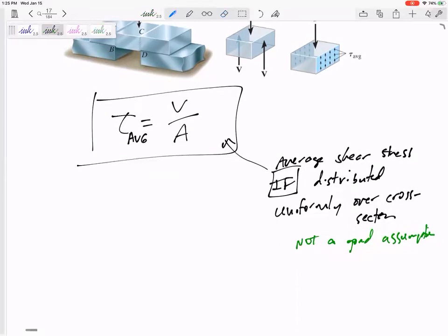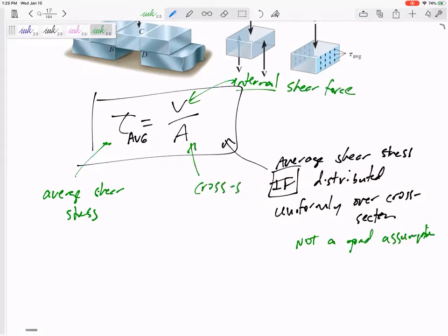All right, so this is average shear stress. This is the internal divided by the cross-sectional area.